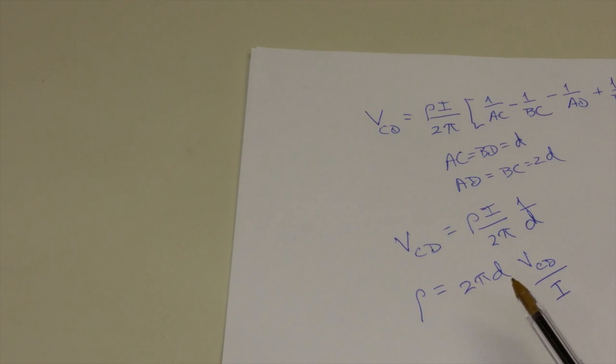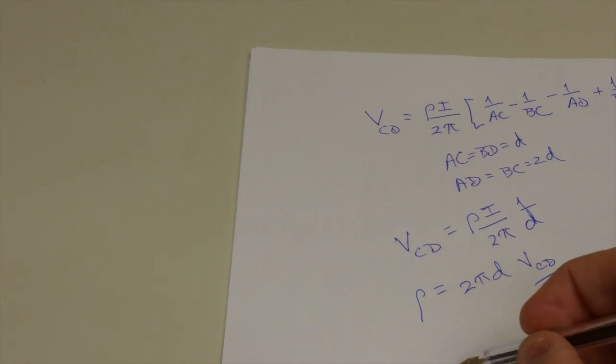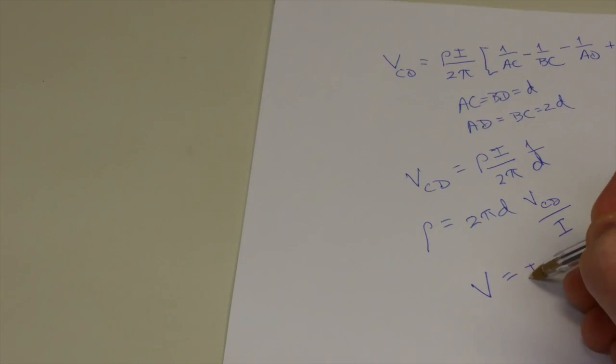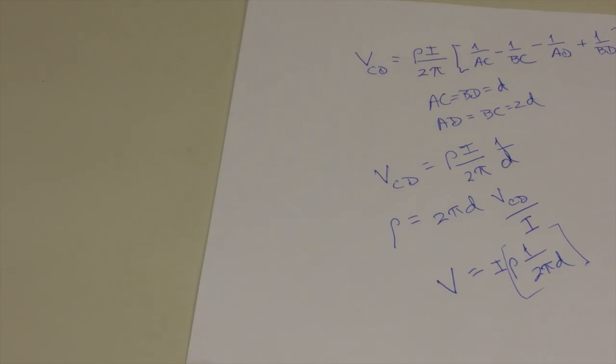Let's just pause for a minute and look at this. This can be rearranged a little bit to express the voltage in terms of the current and the resistance. We have V equal I rho 1 over 2 pi D, and this is the resistance. So you see that this has the form of Ohm's law. If you recall in the case of the resistor, we had V equals I rho L over A. Now we have V equal I rho times this geometric factor. Instead of L over A, we have 1 over 2 pi D.